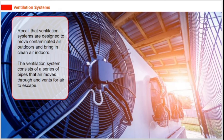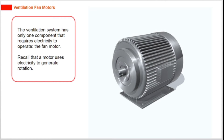Ventilation systems are designed to move contaminated air outdoors and bring in clean air indoors. The ventilation system consists of a series of pipes that air moves through and vents for air to escape. The ventilation system has only one component that requires electricity to operate: the fan motor. A motor uses electricity to generate rotation.